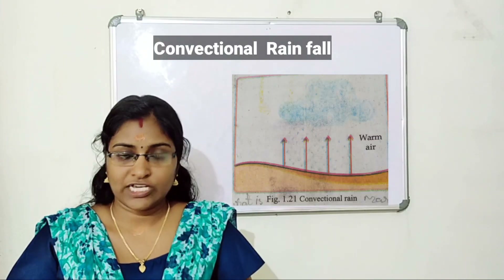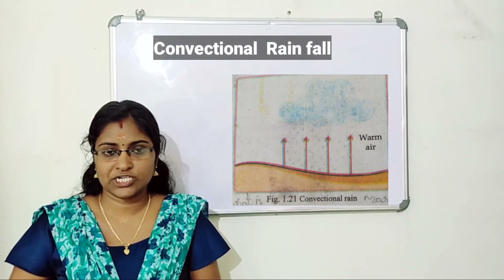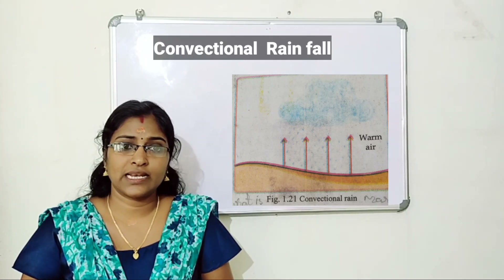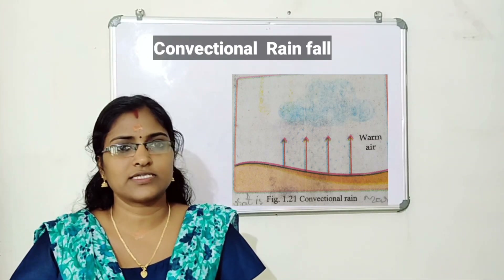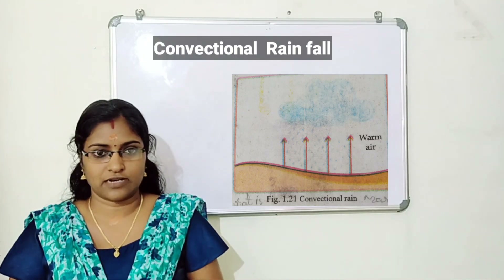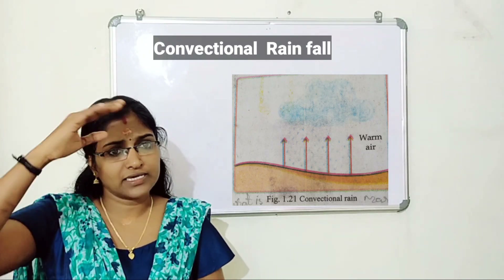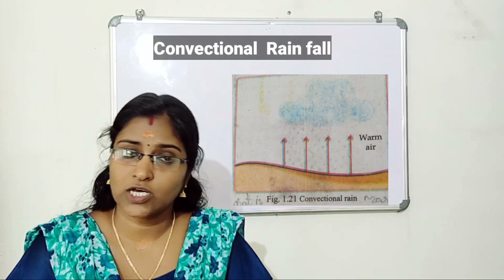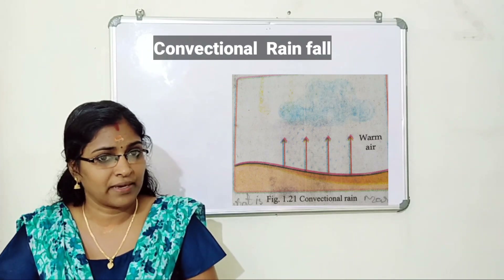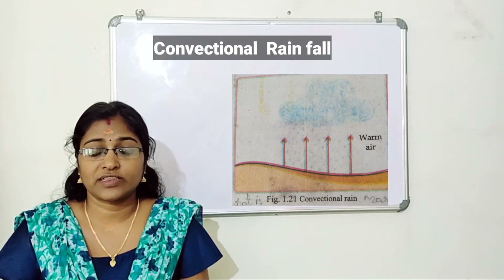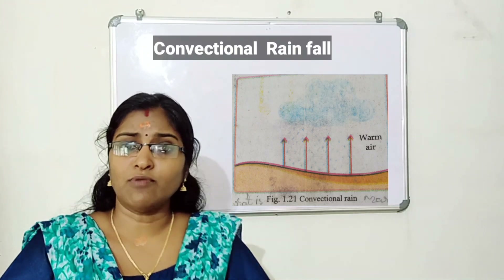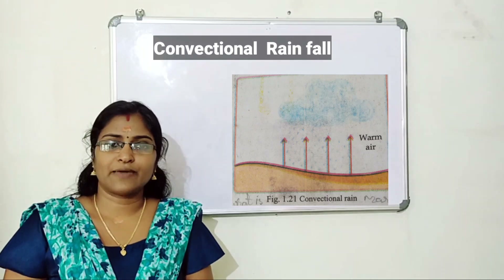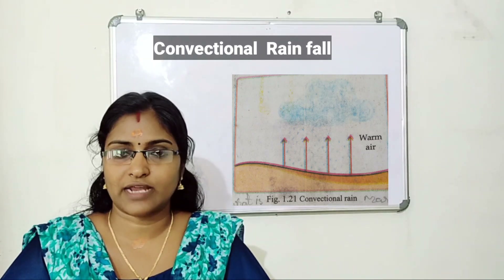What is conventional rainfall? Due to high temperature in equatorial regions, air gets heated and rises upward. Cumulus clouds are formed by the cooling and condensation of this rising warm air. Rainfall occurs with thunder and lightning. This rain mostly occurs in the afternoon and does not last long. This type of rainfall is known as conventional rainfall.